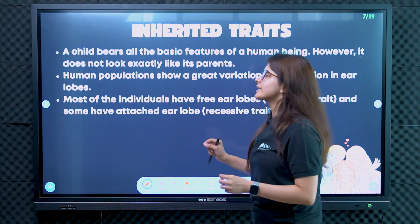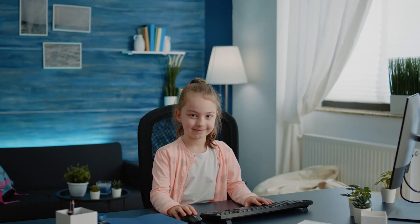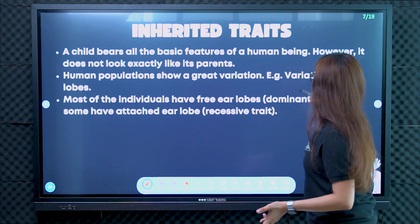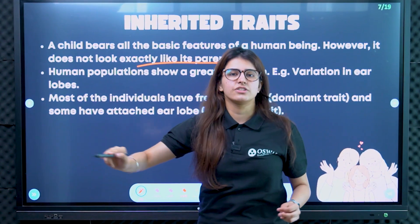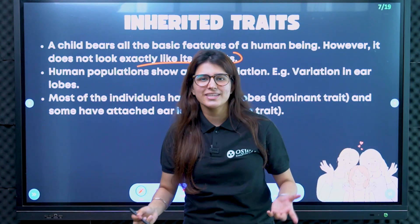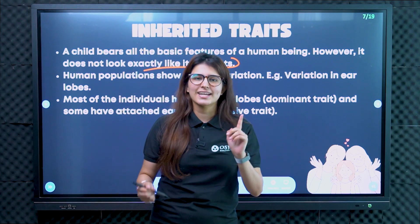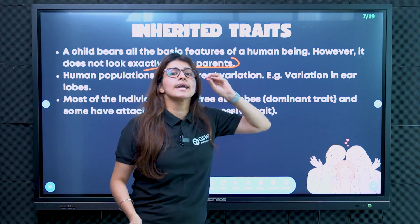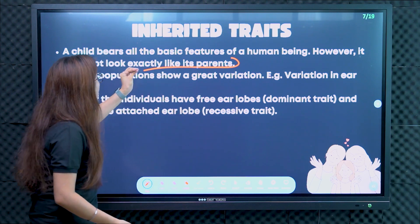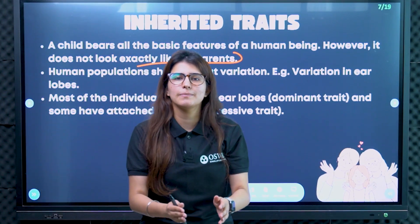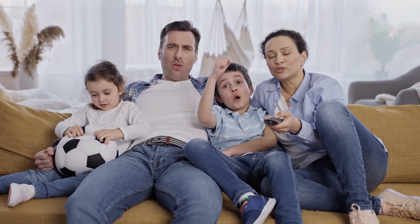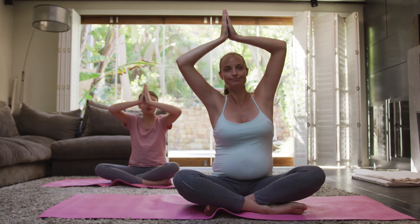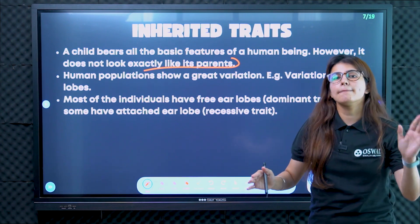Inherited traits — how do we define them? A child bears all the basic features of a human being, but a newborn infant does not exactly look like its parents. You can see that we have two hands, two arms, two legs, one neck — so we know it is a human being, the same species. But there is a condition that they may not exactly look like their parents. There are size differences, feature differences, and behavior differences — many characteristics differ between my parents and myself.